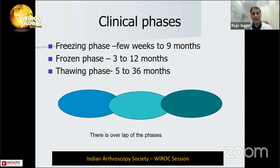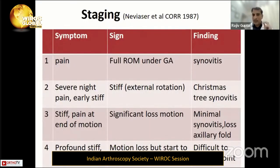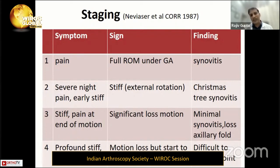We know there are three phases: freezing, frozen, and thawing. It can last up to three years. Initially pain starts with adhesive capsulitis, and it is difficult to differentiate between frozen shoulder and impingement in the first initial months. Later, external rotation becomes restricted first, then internal rotation starts decreasing.